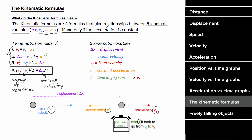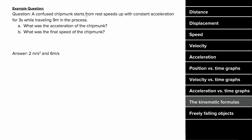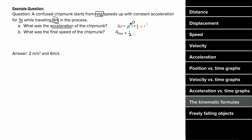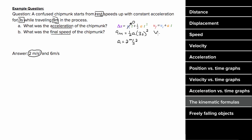What would an example problem involving kinematic formulas look like? A confused chipmunk started from rest and sped up with constant acceleration for three seconds, traveling nine meters. Using the second kinematic formula: displacement is nine meters, initial velocity is zero, time is three seconds — solving for acceleration gives two meters per second squared. We can also solve for the final speed using the first kinematic formula: initial speed is zero, acceleration is two, time is three seconds, giving a final velocity of six meters per second. These formulas work because the acceleration is constant.